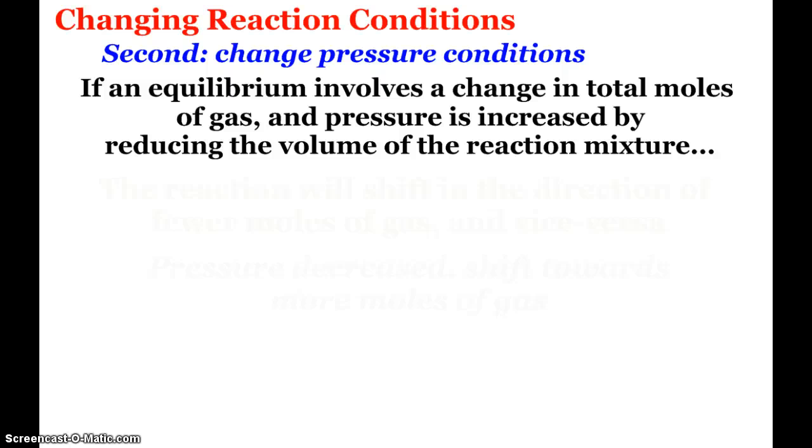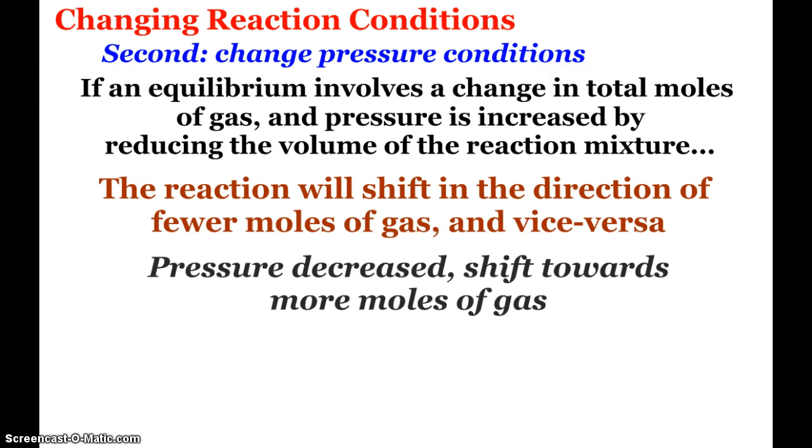Next, we can change pressure conditions. Again, since we're really talking about gaseous equilibriums. If the equilibrium involves a change in total moles of gas, meaning the amount of moles of gas on the product side and the reactant side are different, and if we increase pressure by reducing the volume of the reaction mixture, then the reaction is going to shift to where there's fewer moles of gas. If we decrease the pressure, the shift is going to be towards more moles of gas.